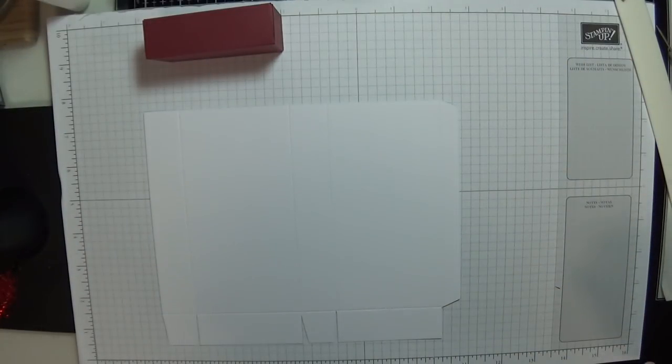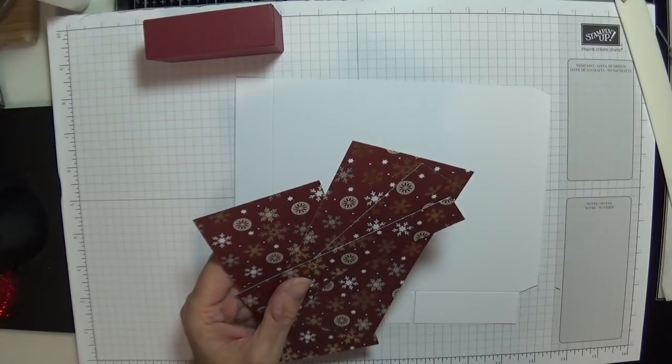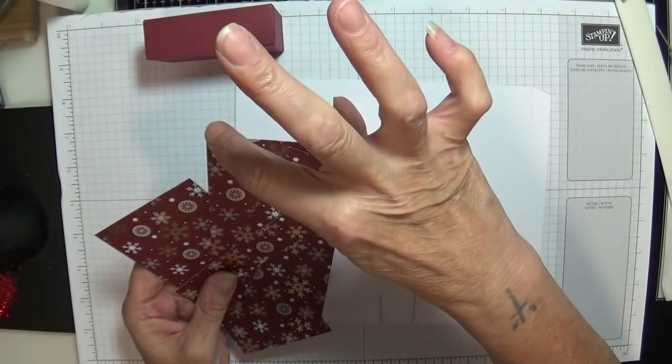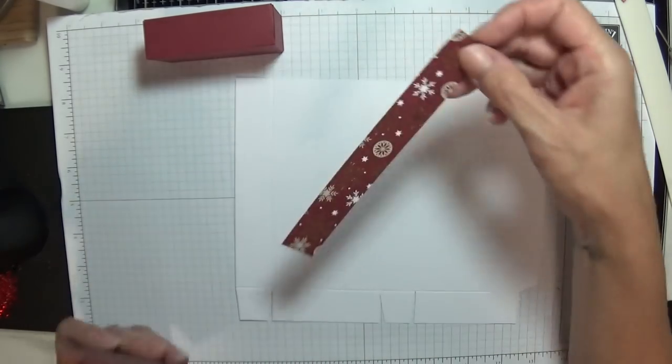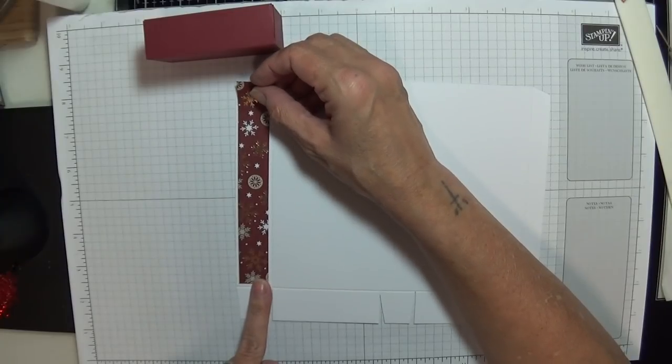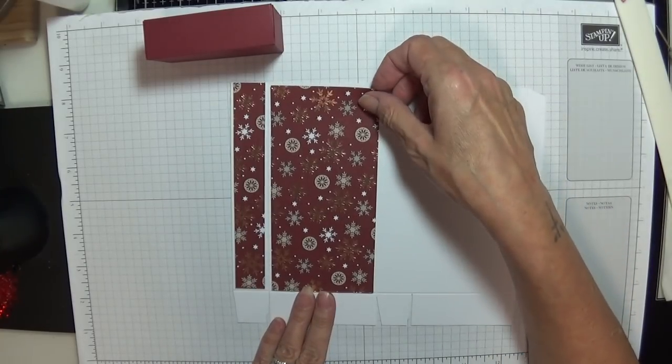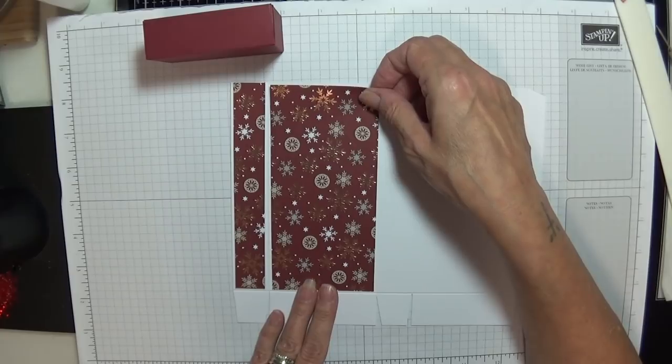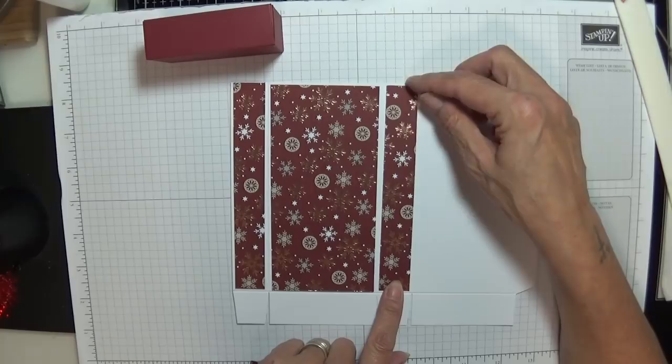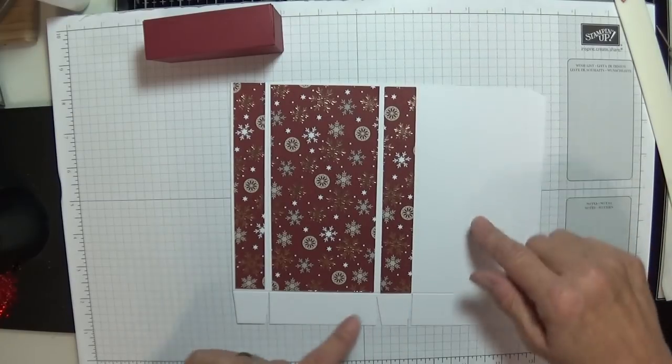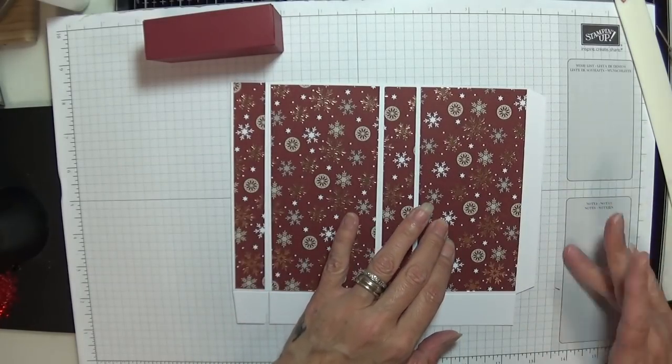Before we burnish, we are going to fetch in this gorgeous designer series paper. I cut mine down four by six, then took it down to five and seven eighths. On the long side I cut my seven eighths of an inch strip which is for these parts. Then I cut this down to two and seven eighths. I've got a tiny little border all the way round showing off this gorgeous paper.